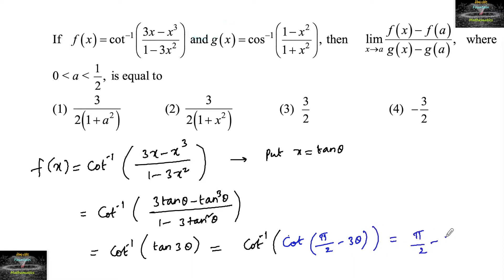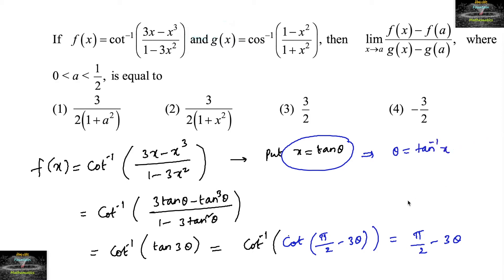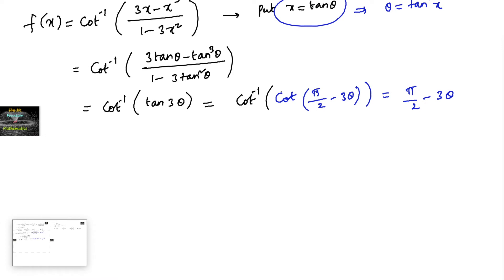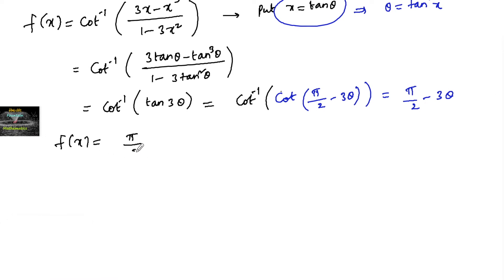This equals π/2 - 3θ. Since x = tan θ, θ = tan⁻¹(x). So f(x) = π/2 - 3tan⁻¹(x). This is equation C1.